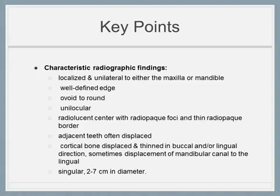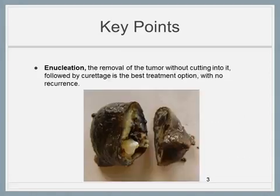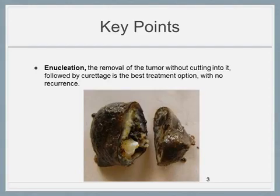Adjacent teeth are often displaced. Cortical bone is also displaced and thinned in the buccal or lingual direction, and sometimes there is displacement of the mandibular canal to the lingual. The tumor is two to seven centimeters in diameter. Enucleation — the removal of the tumor without cutting into it — followed by curettage is the best treatment option, resulting in no recurrence.